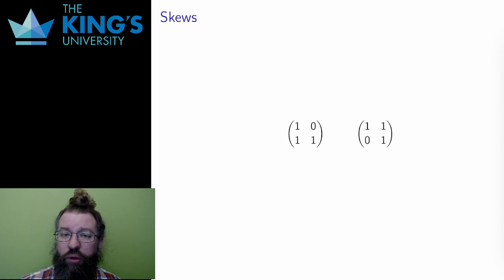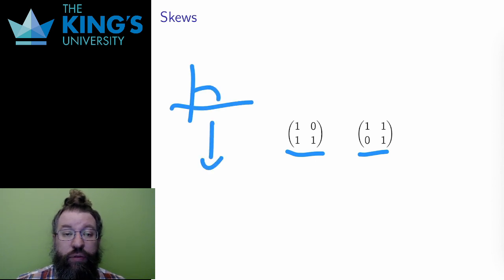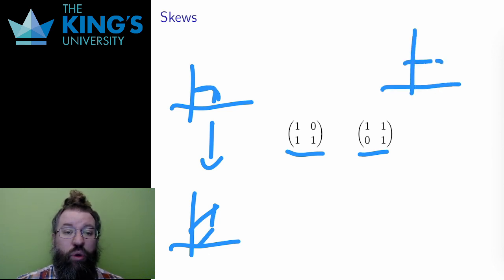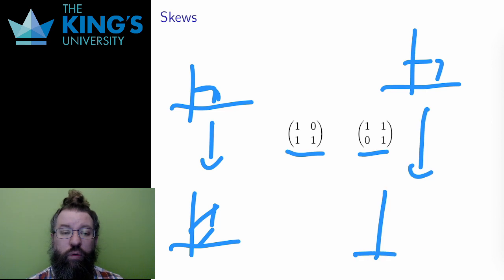I don't have a nice general form for skews, but let me simply give you two examples. These two are skews. The first is a vertical skew. It will take a square in the first quadrant and pull the far edges upward. The second is a horizontal skew. It will take a square in the first quadrant and pull the top edge over to the right.